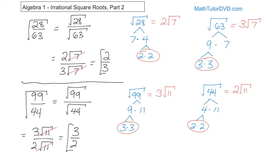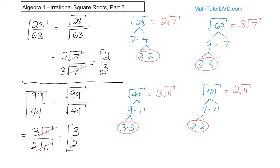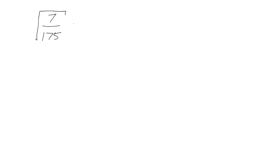That's the final answer. Don't be afraid to cancel radicals — they're perfectly fine to cancel, just like anything else. If you have the same number on the top and bottom of a fraction, you get a cancellation. Final problem: 7 over 175. Let's take the square root of that. It'll be the square root of 7 on the top, and the square root of 175 on the bottom.